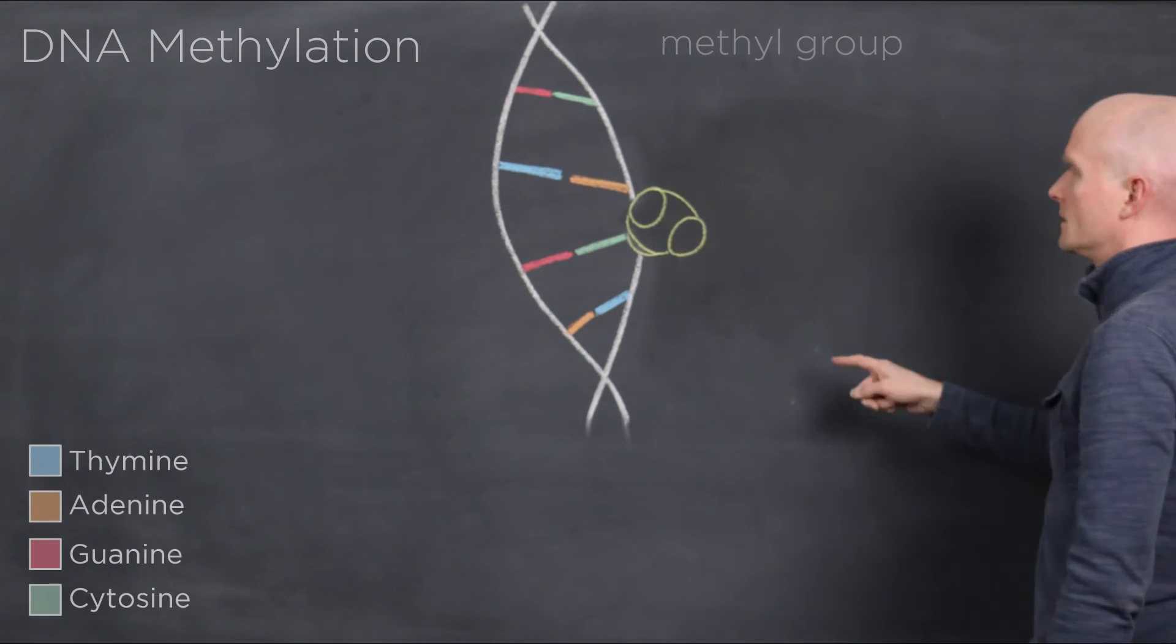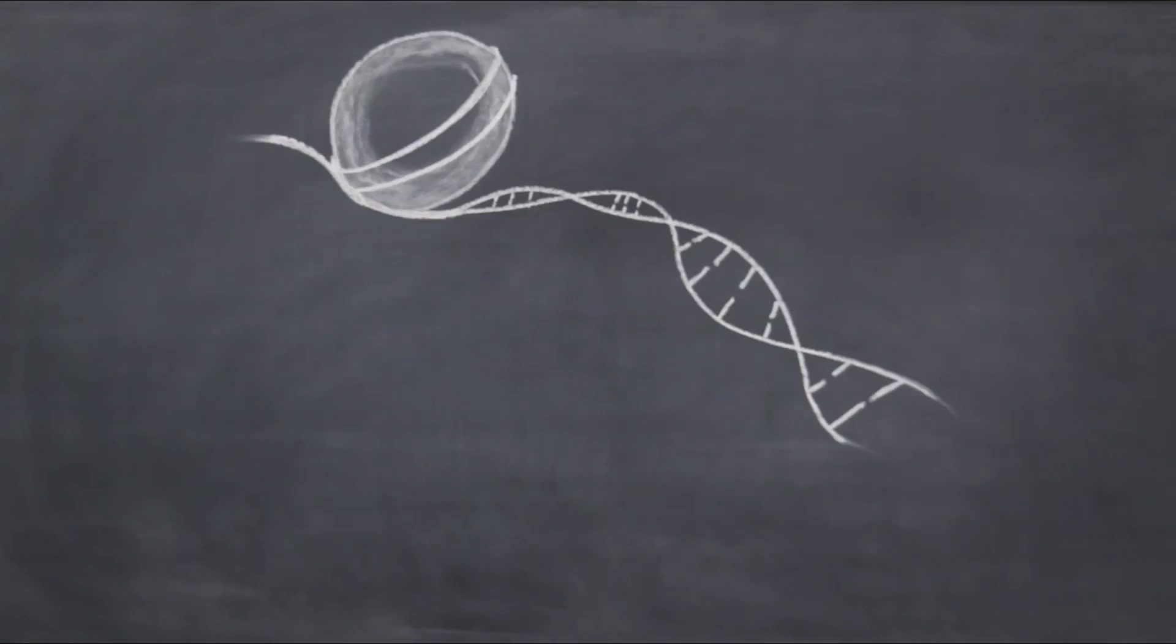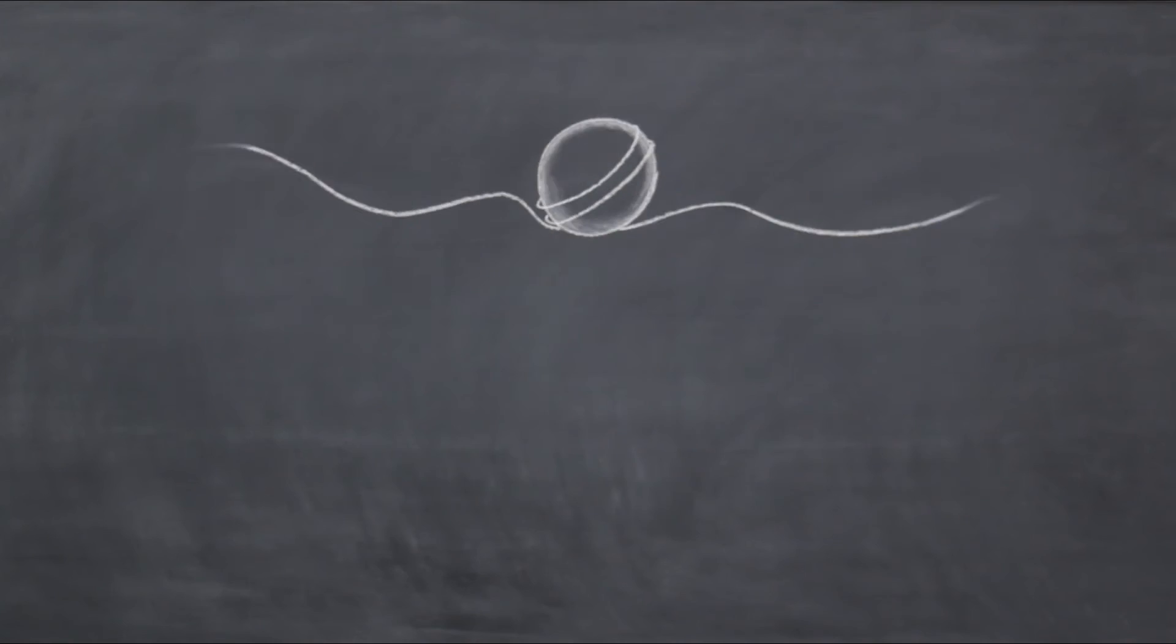For example, under certain circumstances, methylation of one's DNA during one's lifetime can be transmitted to one's offspring.